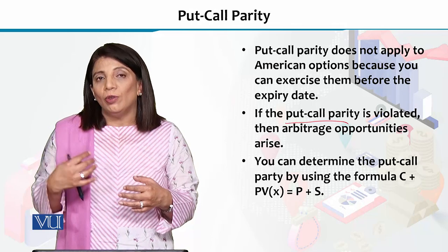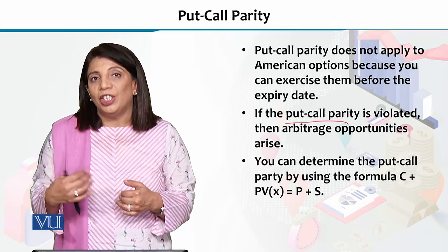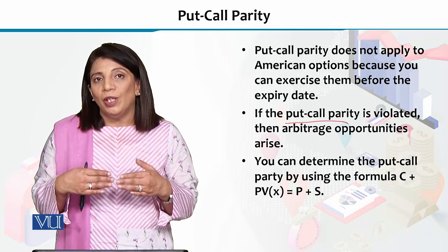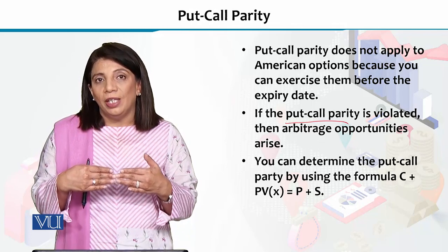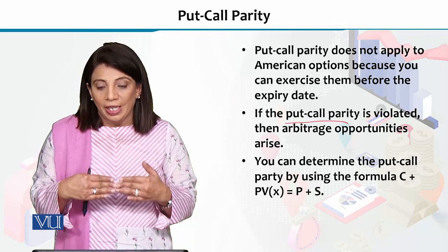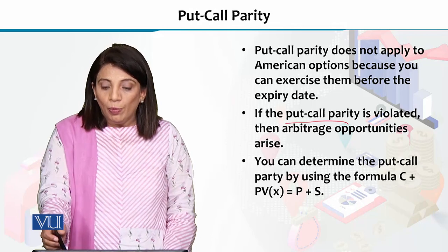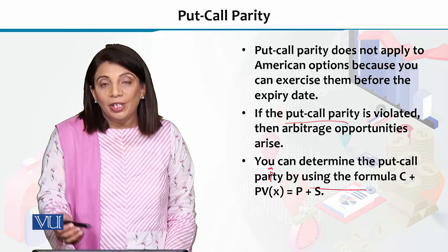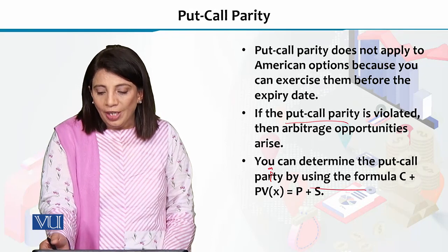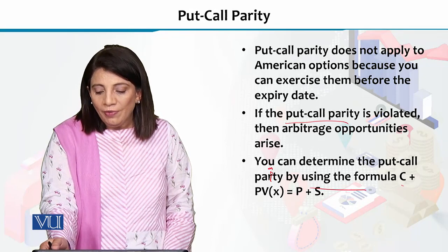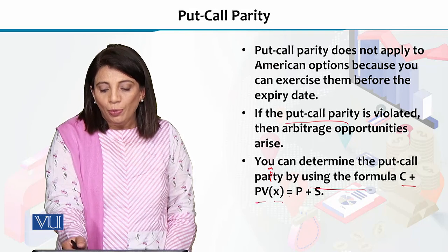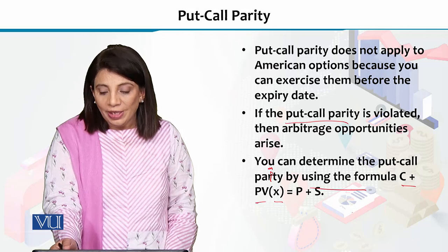If there is a difference between both sides, then arbitrage will arise. If there is no difference, both will sit at the parity level. We can determine put-call parity using this formula: C plus the present value of X should be equal to P plus S.